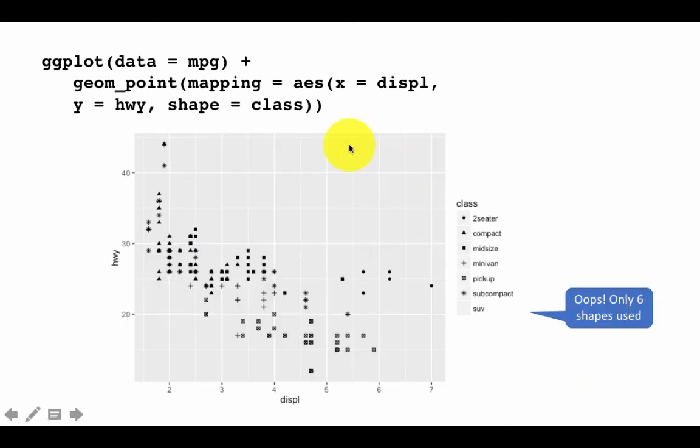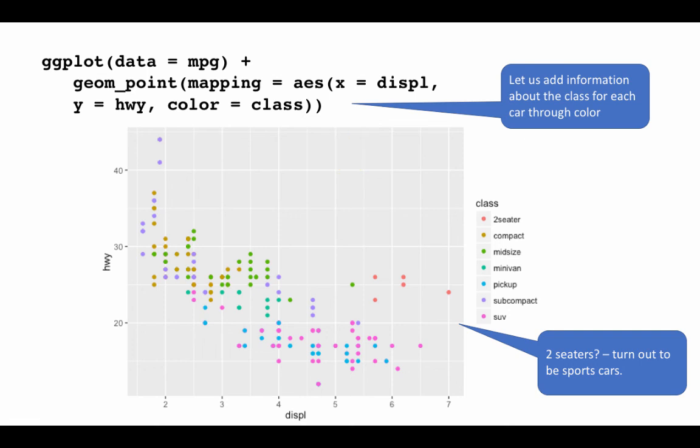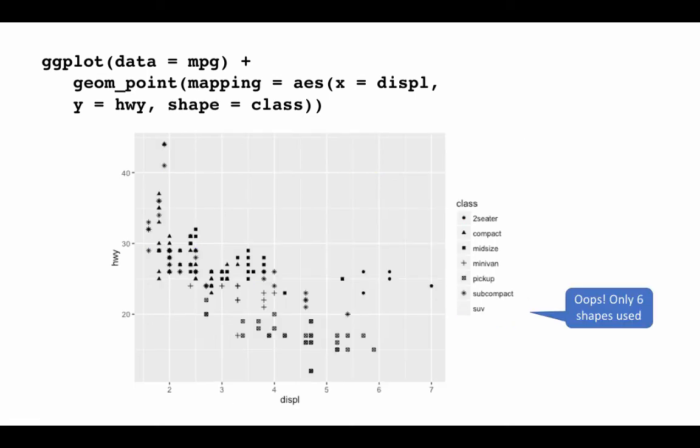So it's not that we can only add a dimension by adding color. We can add a dimension by adding a shape instead of color. So now we're saying instead of giving a different color to cars belonging to different classes, instead give them a different shape. Now sometimes this may be useful because you might be showing or presenting your charts on a black and white surface. So color may not make a lot of sense in that context. So we can plot them with different shapes and that's what's going on here.